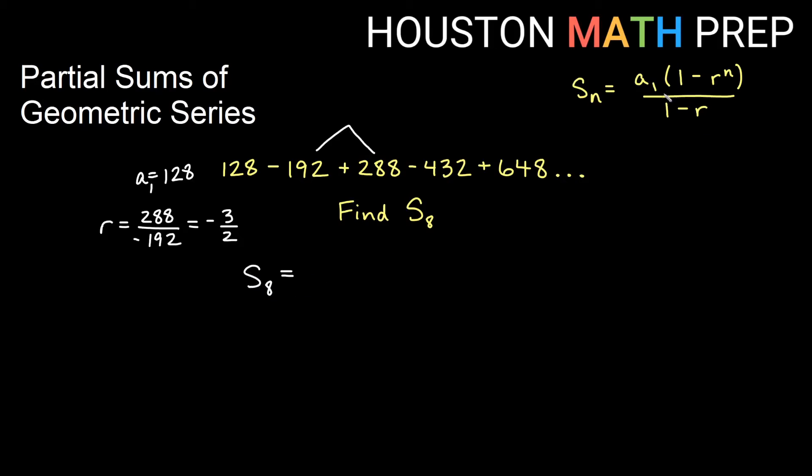All right, so my sum for the first 8 terms, a_1 is 128 times the quantity 1 minus r to the n. So 1 minus negative 3 halves to the n. I want 8 terms, so n is 8. And then I go ahead and divide all that by 1 minus r. Now, I already have a negative here, so it's actually going to be like 1 plus 3 halves. Go ahead and plug all that into our calculator. And we get an answer of negative 1261 for this one.